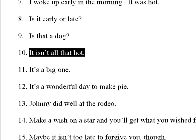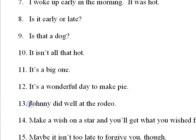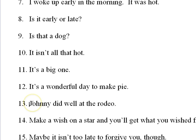Number eleven — it's a big one. You have two emphasized syllables in that line. Number twelve: It's a wonderful day to make pie. It's a wonderful day to make pie. Number thirteen — be careful with counting syllables, particularly in this last word. Johnny did well at the rodeo. Johnny did well at the rodeo. You should have three syllables in this sentence receiving the stressed indicator.